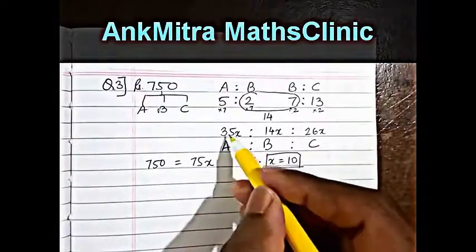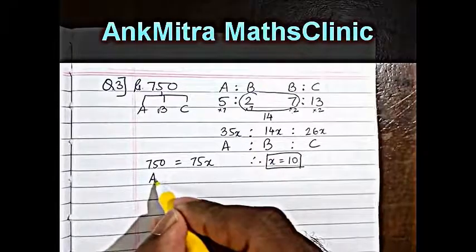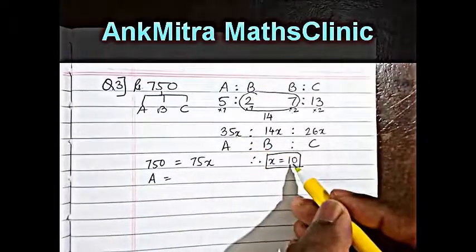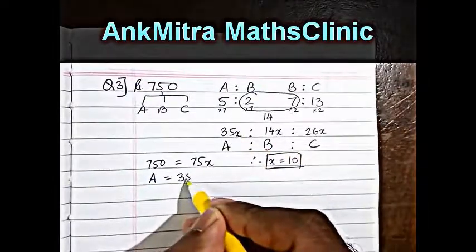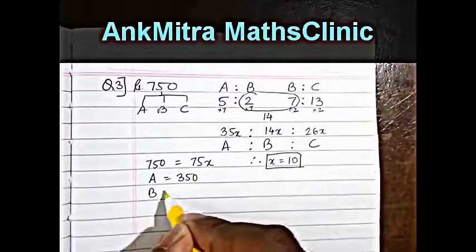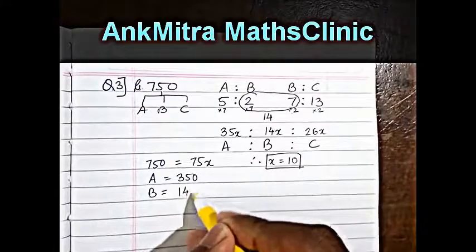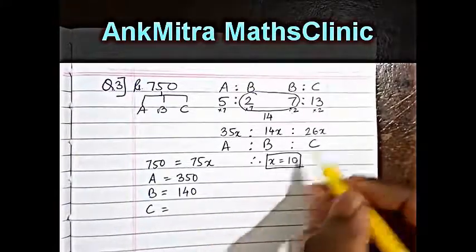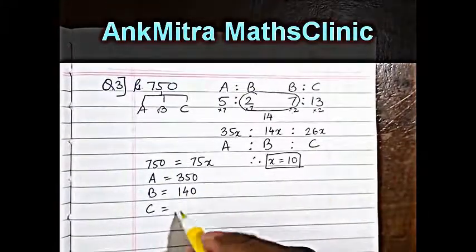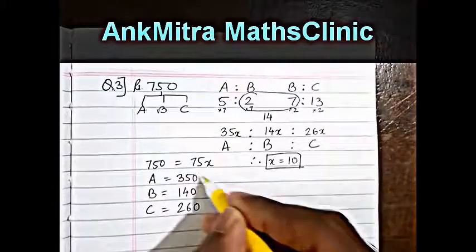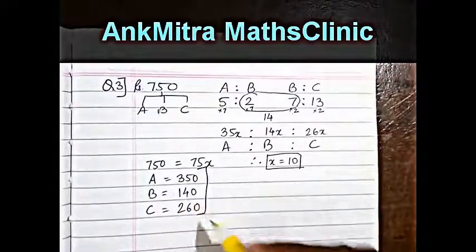Now since x is equal to 10, the amount received by A will be 35x which is 350, amount received by B will be 14x which is 140, and amount received by C will be 26x which is 260. So we have the answer here.